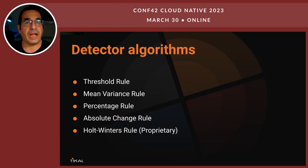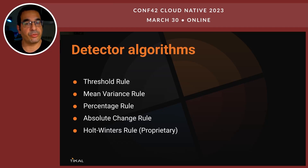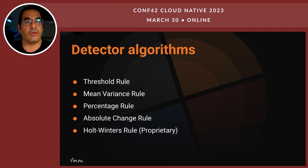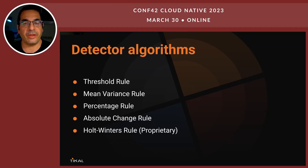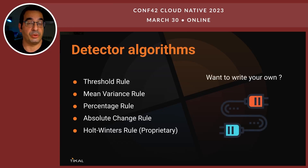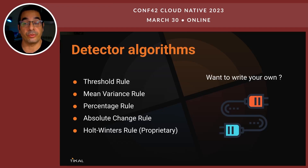There are multiple detector algorithms which can be used. In the example, you saw the threshold rule. There is also a mean variance rule, a percentage rule, and an absolute change rule. If you get services from StarTree, there is also a Holt-Winters rule, which is proprietary to StarTree and not available under the free non-commercial license. The platform is pluggable, so you can write your own detector algorithms based on your needs.